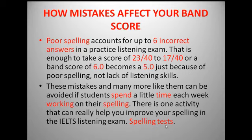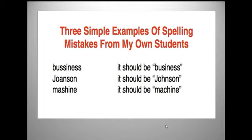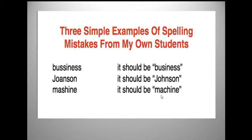I'll tell you more about spelling tests shortly. Let me share some simple spelling errors students make. When they have to write the word 'business,' they write B-U-S-S-I-N-E-S-S — that's wrong. It should be B-U-S-I-N-E-S-S. 'Johnson' is spelled as 'Joe and son' by some students, but the correct spelling is J-O-H-N-S-O-N. 'Machine' is also often spelled wrong — it should be M-A-C-H-I-N-E. Please focus on these mistakes so that your listening module is a great boost to your overall IELTS score.